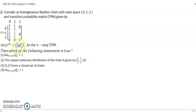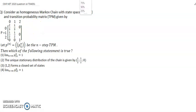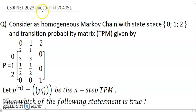Let p^n_ij be the n-step transition probability. We need to determine which of the following statements is true: (1) limit n→∞ p^n_{21} = 0, (2) the unique stationary distribution is [1/2, 1/2, 0], (3) {1, 2} forms a closed set of states, (4) limit n→∞ p^n_{22} = 1. This is a CSR NET 2023 question, ID 7040.